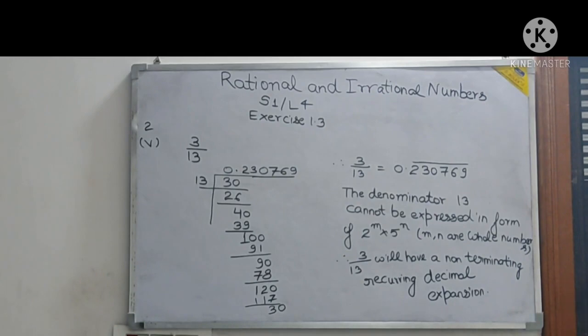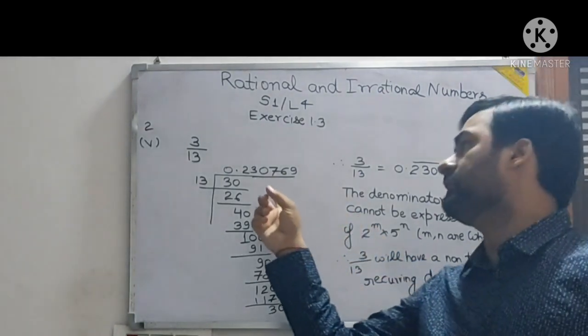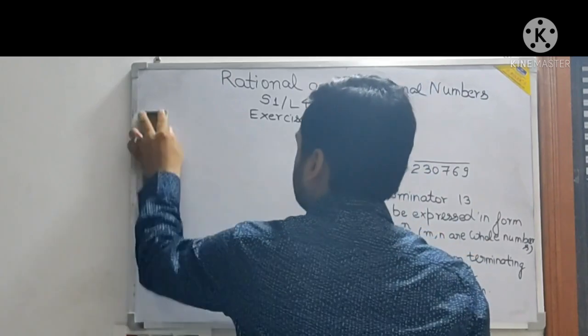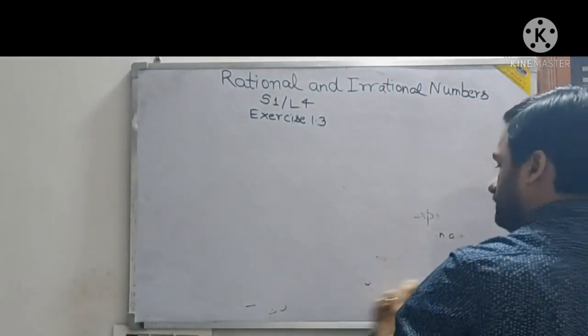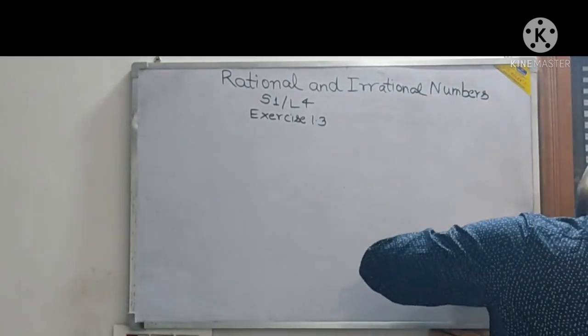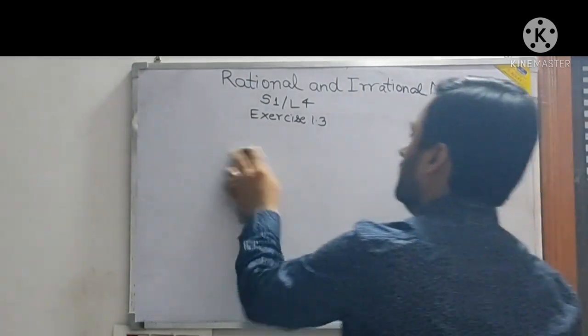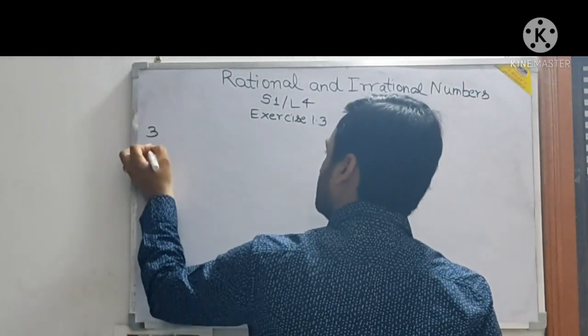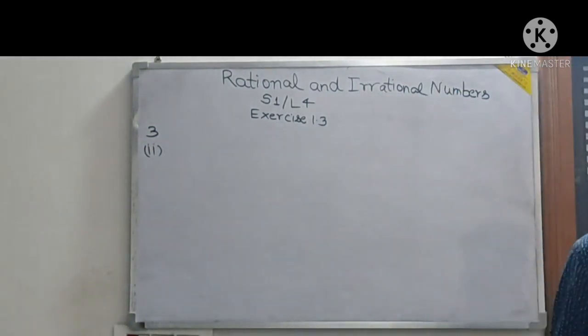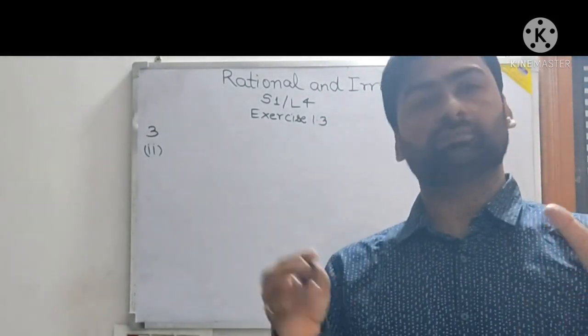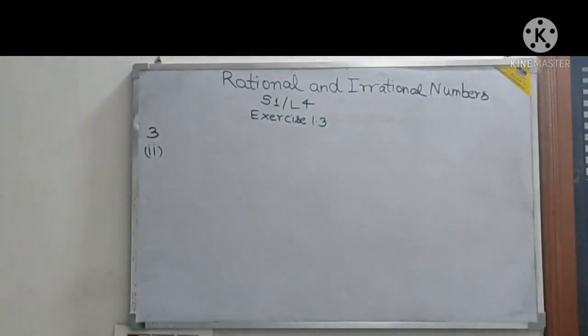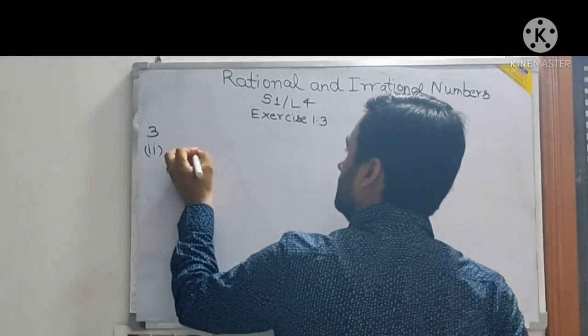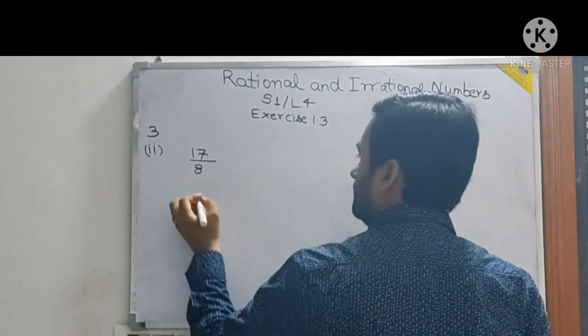Third question says, without actually performing the long division. So the second part of the question says without performing the long division. That means you only have to prime factorize the denominator. So I am taking the third question, second part. In the second question they are asking show the long division, but the third part says without performing the long division. So second part is 17 by 8.